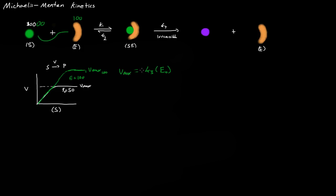Now that we have an equation for Vmax, let's find an equation representing the entire V vs. [S] curve. The production rate of P is equal to K3 times the concentration of the substrate-enzyme complex, [SE]. This reaction is the only way we get product, so the rate is simply K3·[SE].